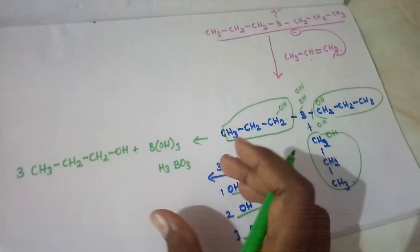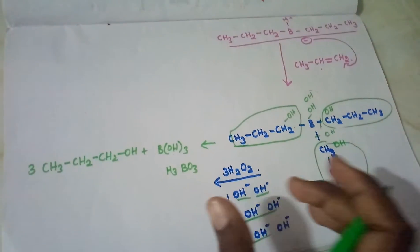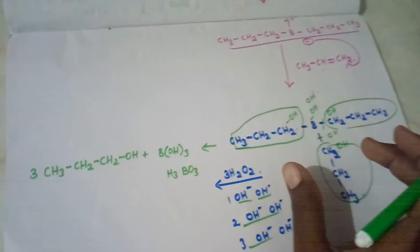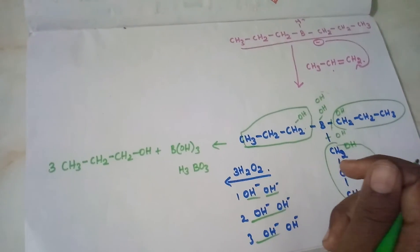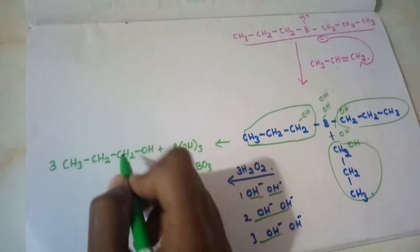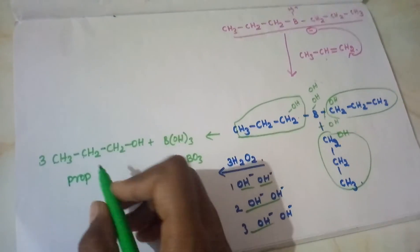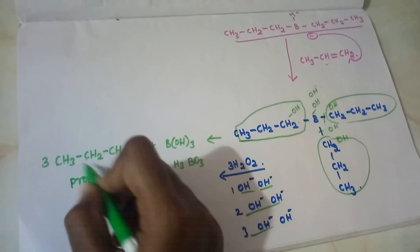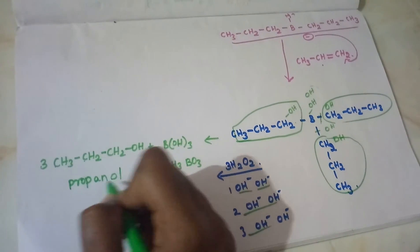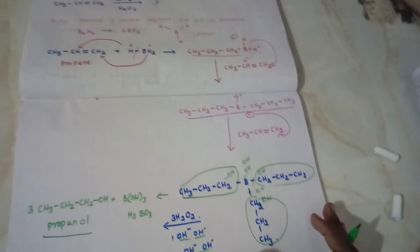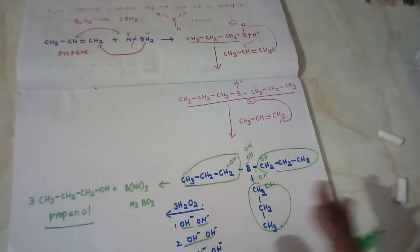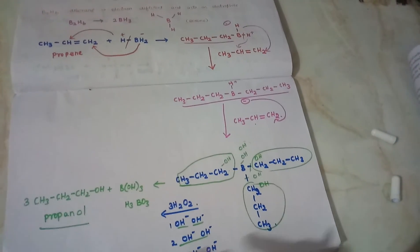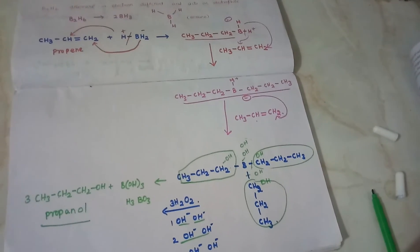This is the second lesson in organic chemistry. So we have 3 molecules of propanol as the final product. This is the mechanism of hydroboration-oxidation. Hope you understand hydroboration now with this clear trick. This is an important question. Thank you for watching — share and subscribe to this channel.